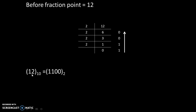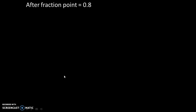So, 12 to the base 10 is equal to 1 1 0 0 to the base 2. Meaning 12 in decimal is equivalent to 1 1 0 0 in binary. Now let's do it for the after-fraction-point value, which is 0.8.